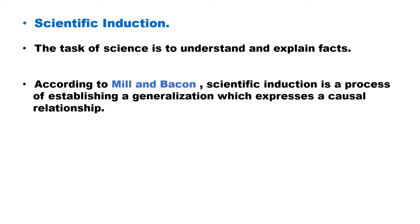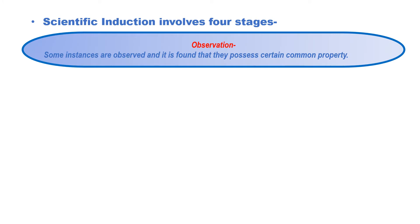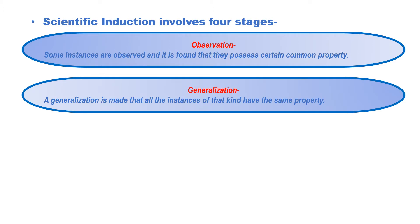Now let us understand the four stages in scientific induction. The first is observation. What do the scientists do? They observe some instances and they find that they possess a certain common property. Some instances are observed and it is found that they possess a certain common property.